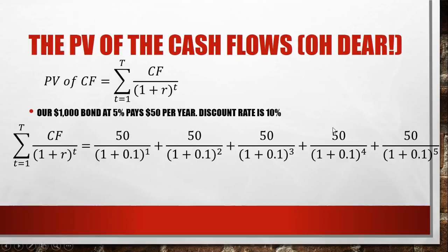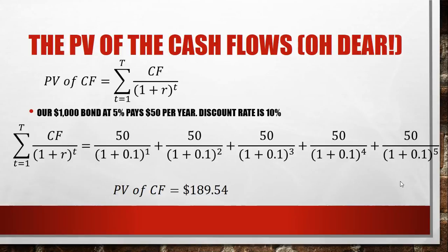So you've got fifty dollars for each of the five years as the cash flows. The bottom number follows a really simple pattern — it's the same formula each time, only changing the power: one for the first year, two for the second year, three, four, and five. All we're doing is counting up the power and copying everything over. We're summing up all of the cash flows discounted by the discount rate, raising it to the power to account for the multiple years that need to be discounted. If you type all of that into your calculator, you get that the present value of the cash flows is $189.54.